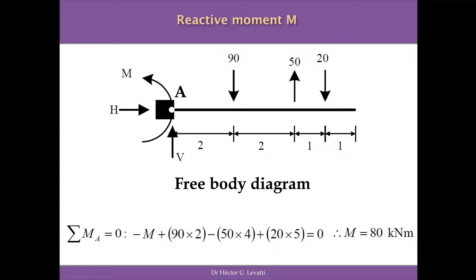In order to establish the value of the reactive moment at point A — where we have the fixed support — we use the third equation of equilibrium: the summation of moments around point A has to be equal to zero. H and V do not produce any moment because they pass through the point. The moment M is in the anti-clockwise direction by our assumption, so it appears as negative in the equation.